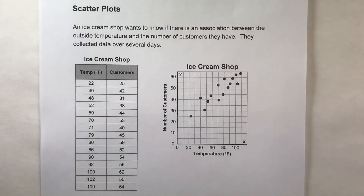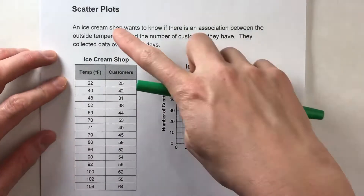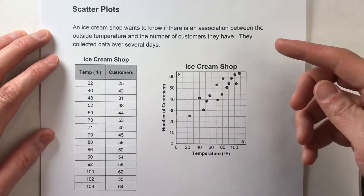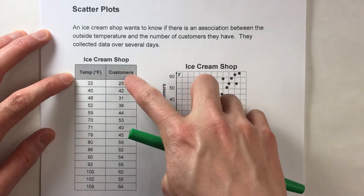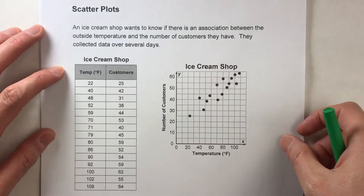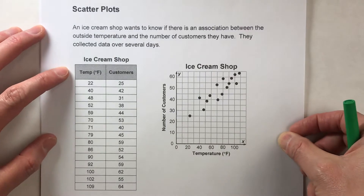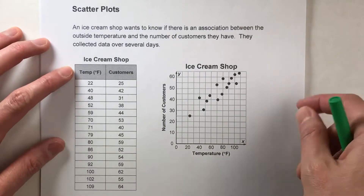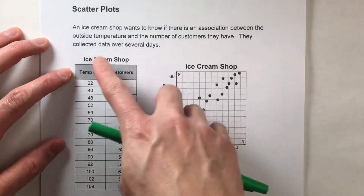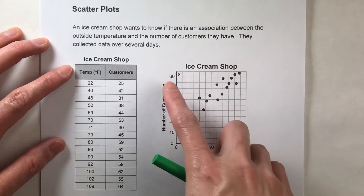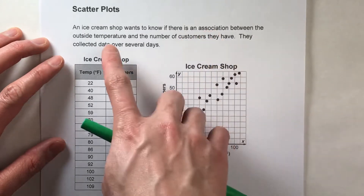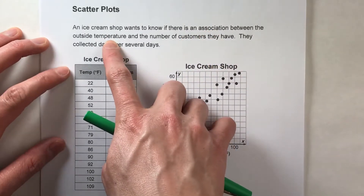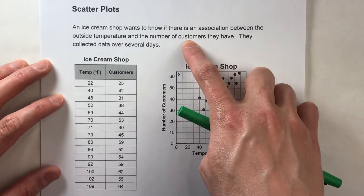Today we are talking about scatter plots. Scatter plots are a way of comparing two different kinds of numbers and seeing if there's a relationship between those two sets of numbers. For example, in this situation we've got an ice cream shop that wants to know if there's an association between outside temperature and number of customers.